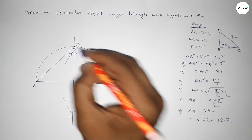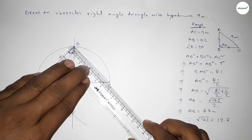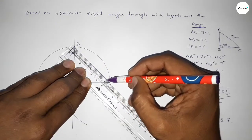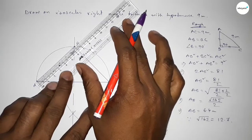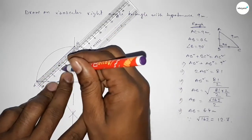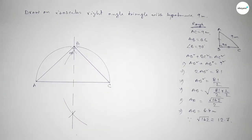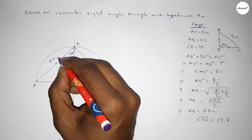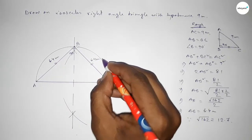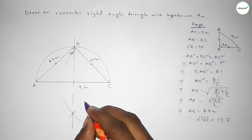Now joining B to C, then joining A to B to get triangle ABC. We know that the angle in a semicircle is always 90 degrees. Checking sides BC and AB with the scale — BC is approximately 6.4 centimeters and AB is also approximately 6.4 centimeters, so the two sides are equal.